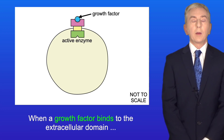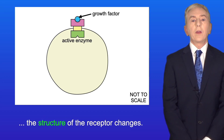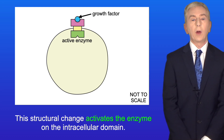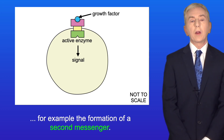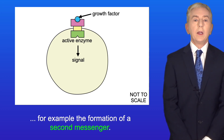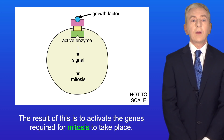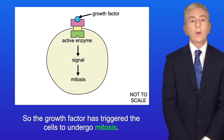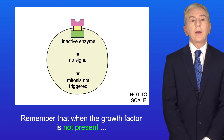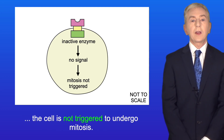When a growth factor binds to the extracellular domain, the structure of the receptor changes. This structural change activates the enzyme on the intracellular domain. The enzyme then triggers a signal within the cytoplasm — for example, the formation of a second messenger — and the result of this is to activate the genes required for mitosis to take place. So the growth factor has triggered the cell to undergo mitosis. Remember that when the growth factor is not present, the cell is not triggered to undergo mitosis.